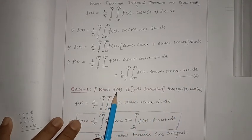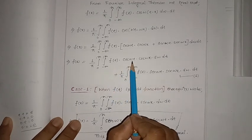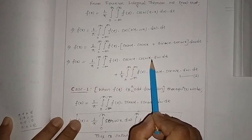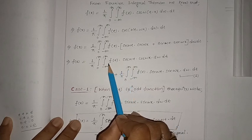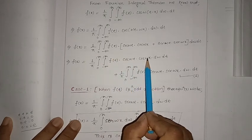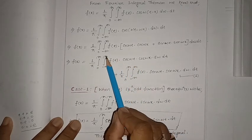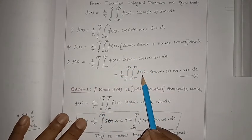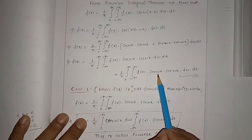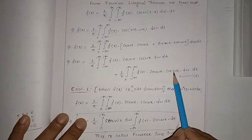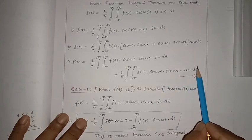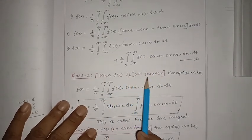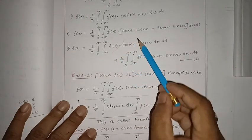In equation number one, consider f(t) multiplied by cos(ωt). cos(ωt) is an even function; f(t) is an odd function, so their product is odd. Integrating an odd function from minus infinity to plus infinity gives zero. For the second term, f(t) is odd and sin(ωt) is also odd, so their product is even.